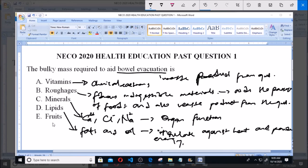Option E says fruits. Fruits consist of vitamins and roughages.